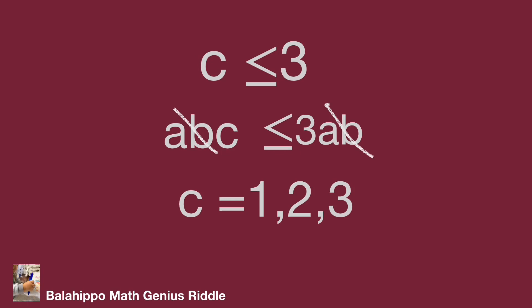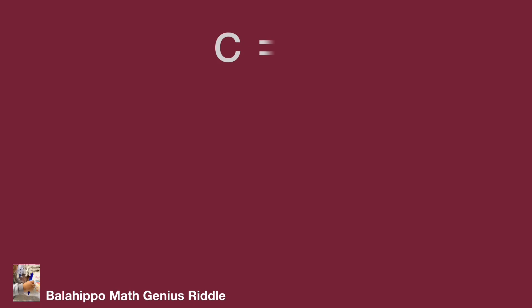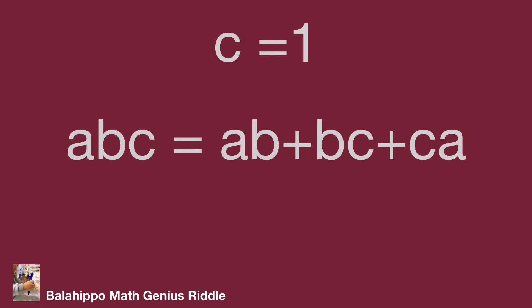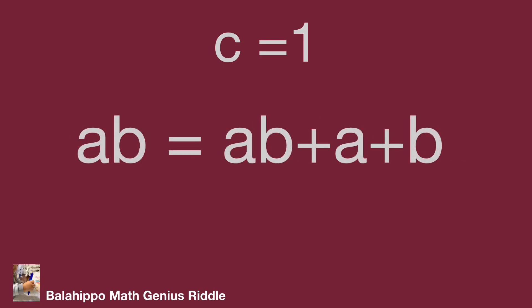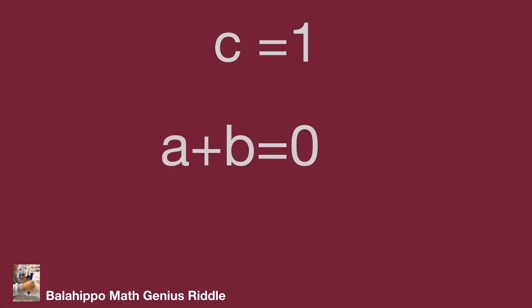From here we get the value scope for c. Then we check the value of c one after one. When c equals 1, substitute c by 1 into the given equation: a·b equals a·b plus a plus b. Eliminating a·b from both sides gives a plus b equals 0. We know a, b not equal to 0 and a, b are positive integers, so this condition cannot give an answer.